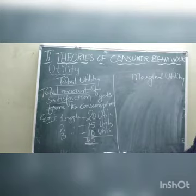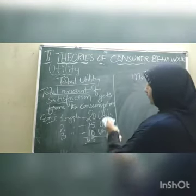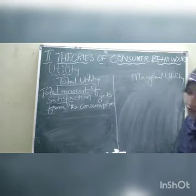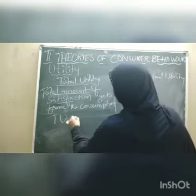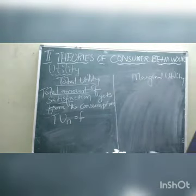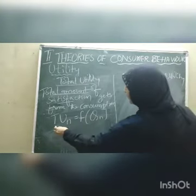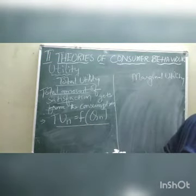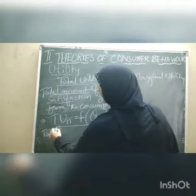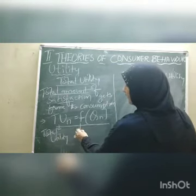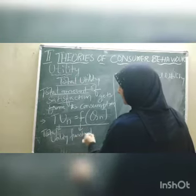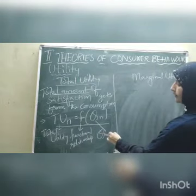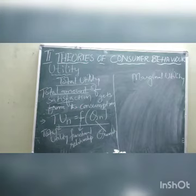The formula for total utility is: TU(N) = F(QN), where TU stands for total utility, F stands for functional relationship, and Q stands for quantity of the total product.